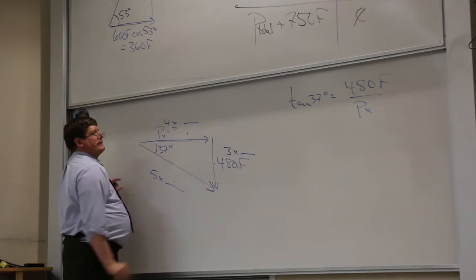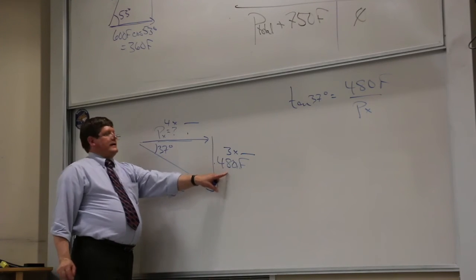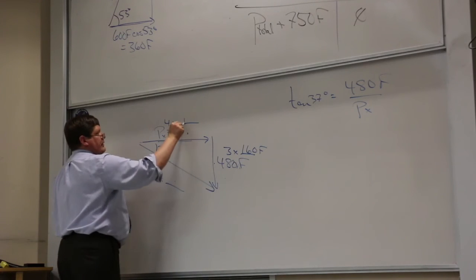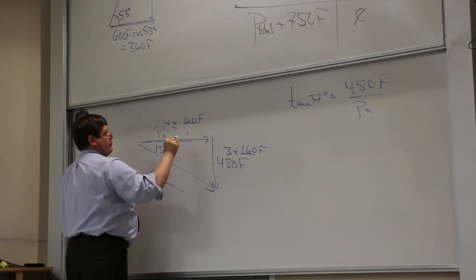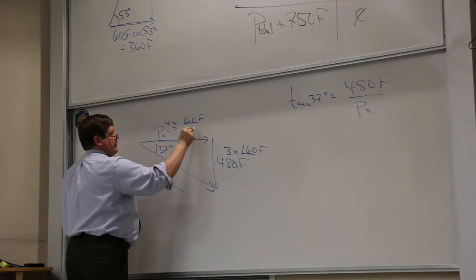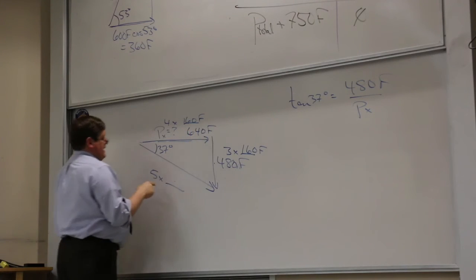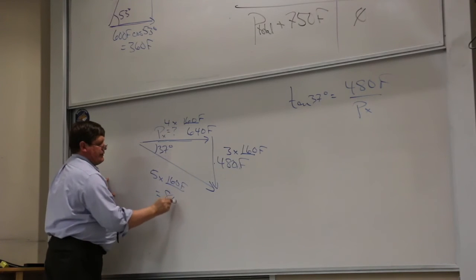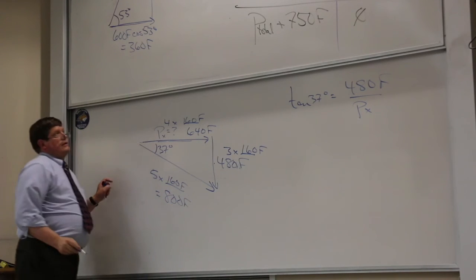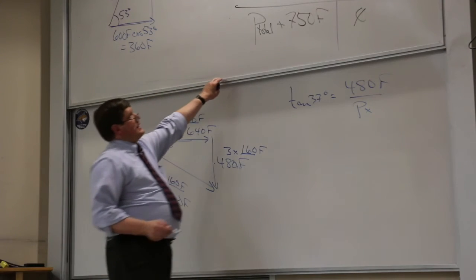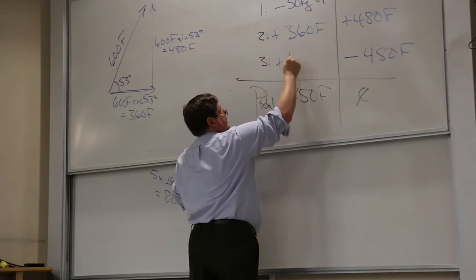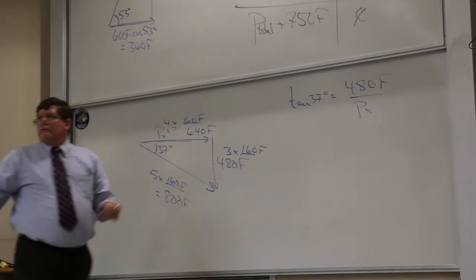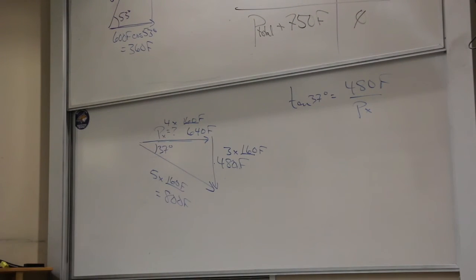And 480 is 3 times 160. So 4 times 160 would be 640. And 5 times 160 would be 800. So now I can come up to my table and I can put 640 for fragment 3.